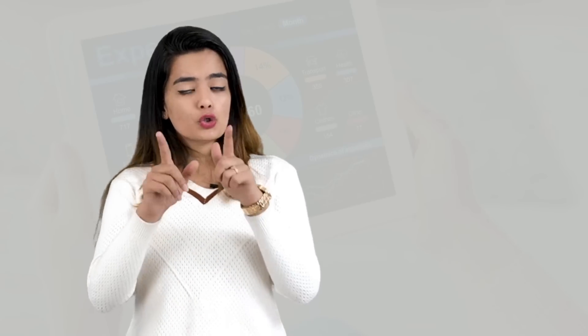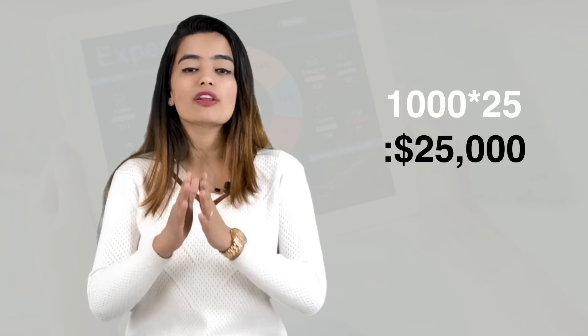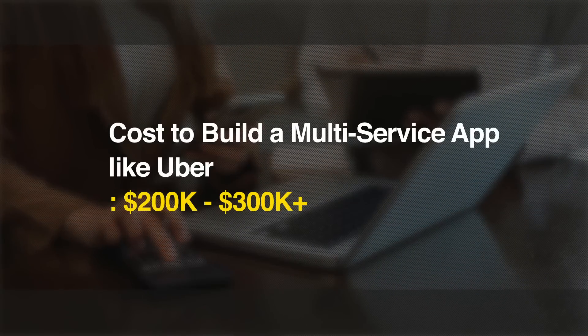The per-hour development cost varies upon location. For example, if you hire a developer agency at the rate of $25 per hour, the cost would be 1,000 hours multiplied by $25, which will cost you $25,000 USD. This is a simple taxi app with basic features. However, if you are looking for something vast and multi-functional like Uber, then the cost may go up to $200,000 to $300,000 USD and even more.